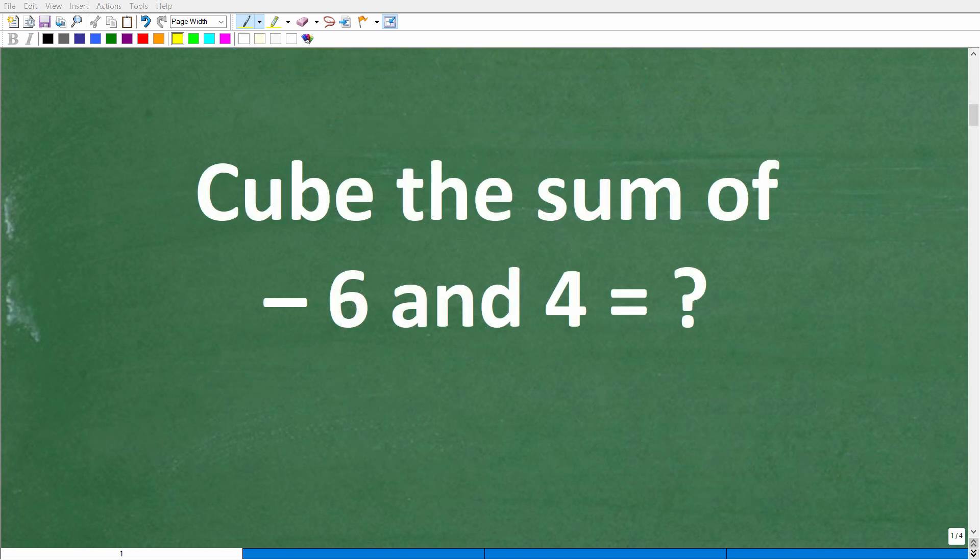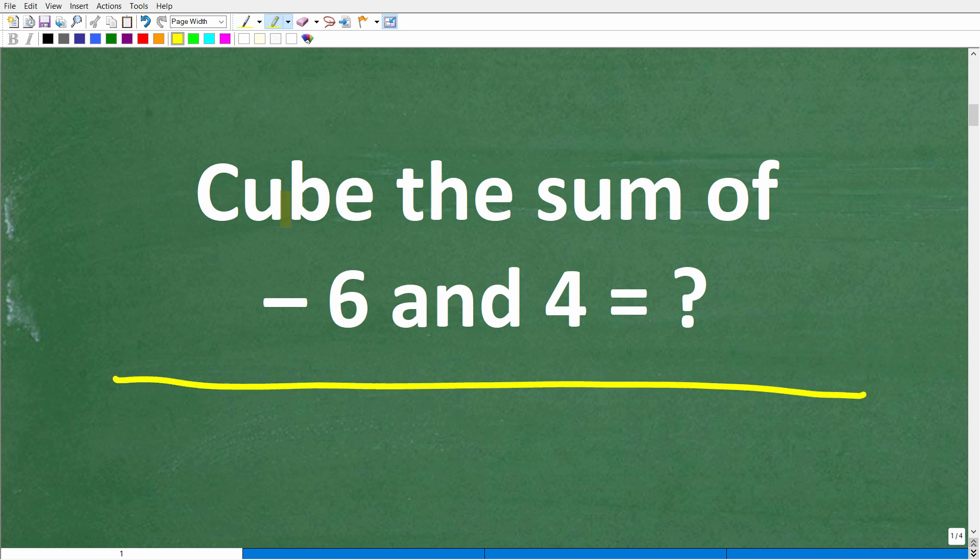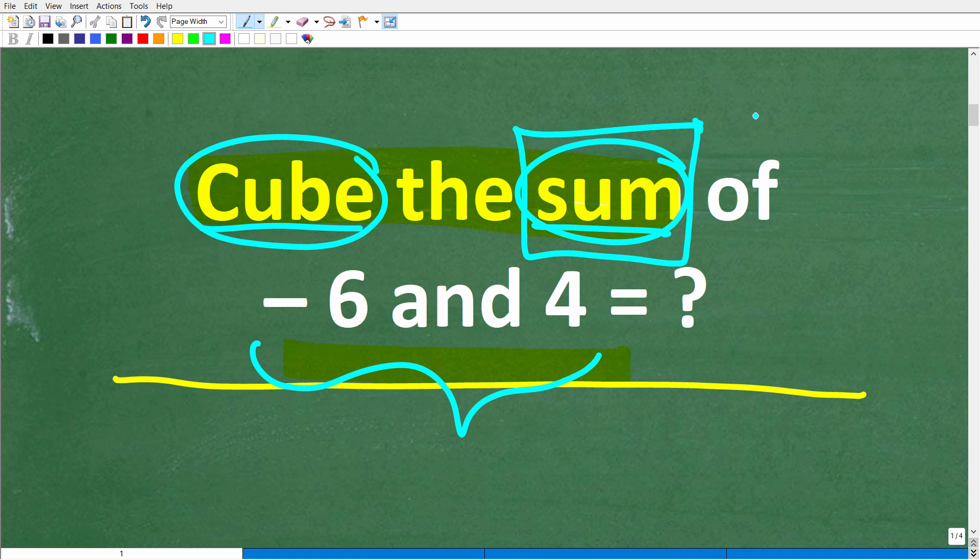So the first step in solving any math problem is to make sure you actually understand the question. Now here we have this phrase, cube the sum of negative 6 and 4. Well, if you're not quite sure what the cube is or the sum is, you're not going to be able to calculate the answer. So let's go ahead and review what the definitions are of the cube and the sum. Matter of fact, I'm going to start with the sum because I think most people are more familiar with this word. And then we'll talk about the cube and then we will calculate the answer.